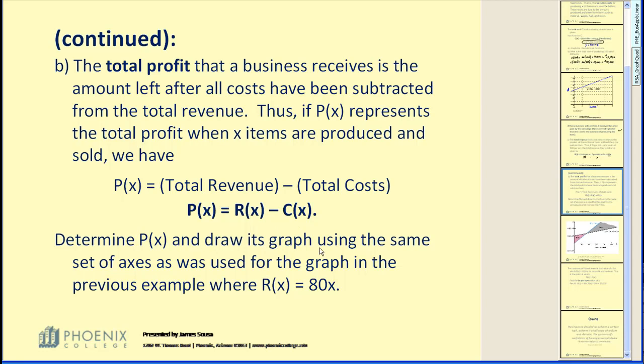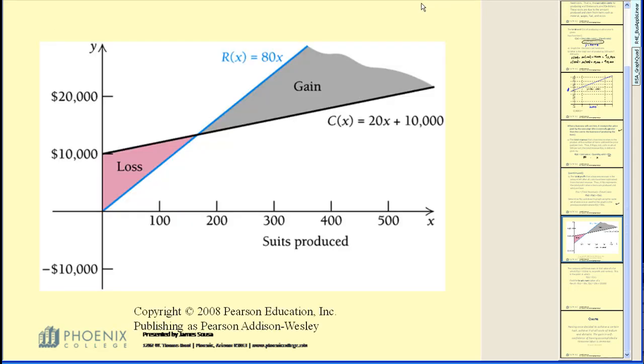Determine the profit and draw its graph using the same set of axes as was used for the graph in the previous example. I've already graphed this, so let's take a look at it. Here in black, we have our cost equation, and notice as you produce more and more suits, the cost goes up. In blue, we have the revenue equation. Again, notice that as you sell more units, your revenue increases. When your costs are more than your revenue, in this region, you have a loss. When the revenue is higher than the cost, you have a gain or a profit. And right here in the middle, we call this where there's no profit or no loss, this would be the break-even point.